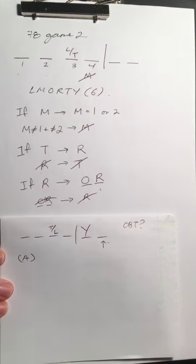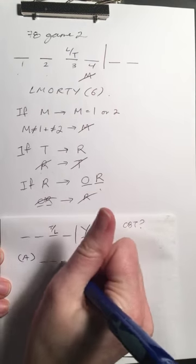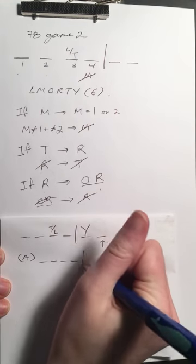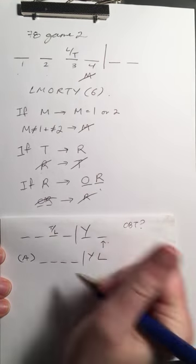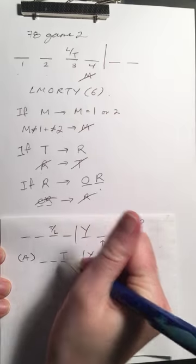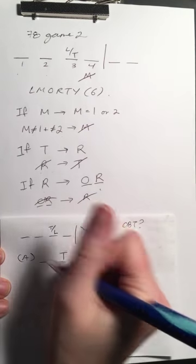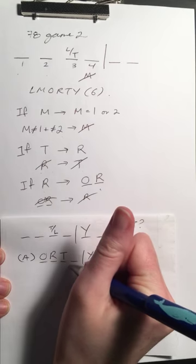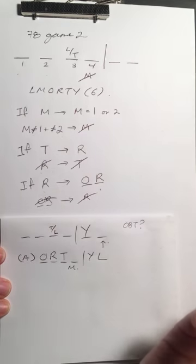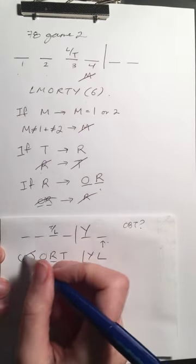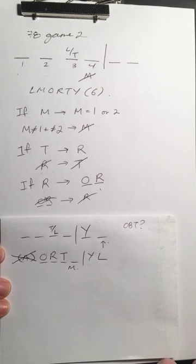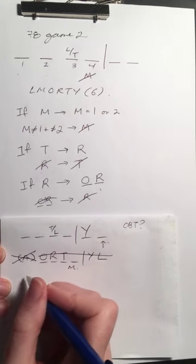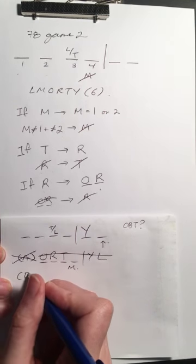Answer choice A: L is not assigned to the project. If we try that — L is out, so T is in. If T is in, R is in. Then we'd have O and R in, and M is left. But if M is in, M must be in spot one or two — that doesn't work. So A is out.